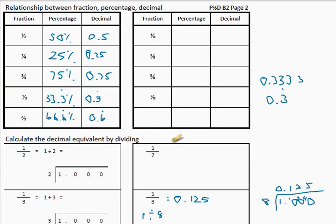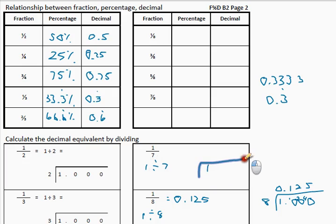So how do you think you can work out 1 seventh? You can say that is 1 divided by 7. In other words, 1 divided by 7, and we know after the 1 we can put a point and zeros. It's your turn — pause the video and do the rest.